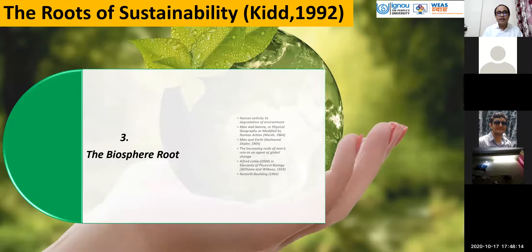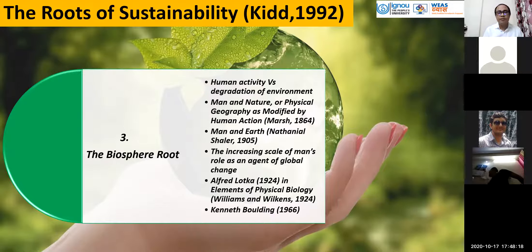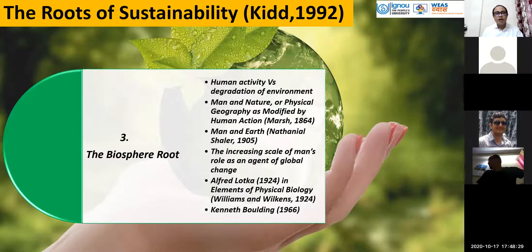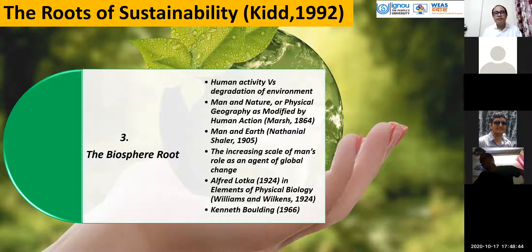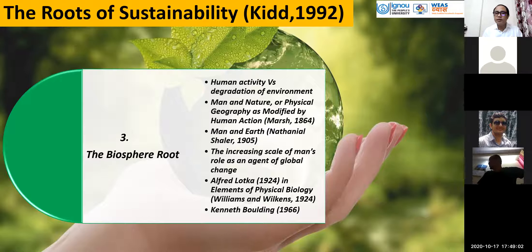The third root is the biosphere route, which talks about human activity versus degradation of the environment. The concept of sustainability is always linked to humans — why are we degrading our environment without understanding future demand? The biosphere route is basically about how much we are degrading the environment. Publications in this route include works by George Perkins Marsh, Alfred Lotka's 'Elements of Physical Biology,' and Kenneth Boulding.